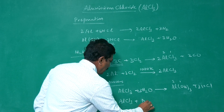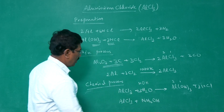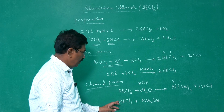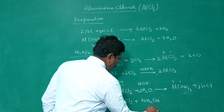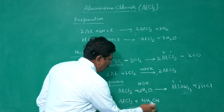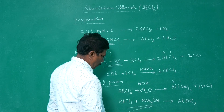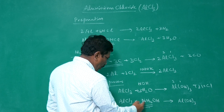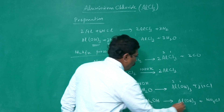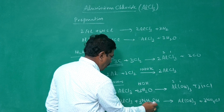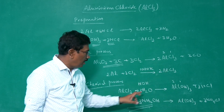Likewise, with ammonium hydroxide, aluminium chloride undergoes a similar type of reaction. The hydrogen from water combines with chloride, and ammonium combines with chlorine to give ammonium chloride, while aluminium hydroxide is also formed. Balancing: with three chlorine atoms, we get three ammonium chloride molecules and one Al(OH)₃. So: AlCl₃ + 3NH₄OH → Al(OH)₃ + 3NH₄Cl.